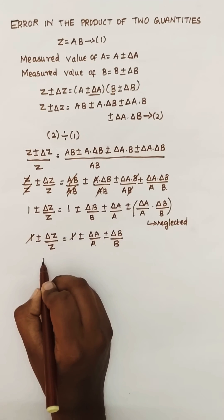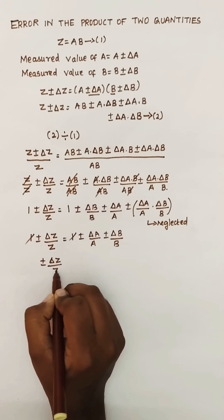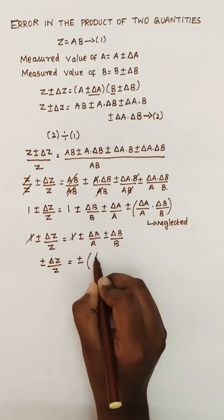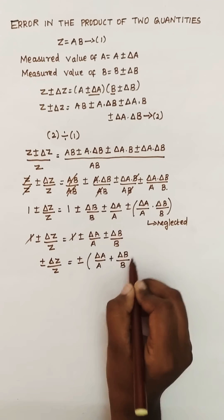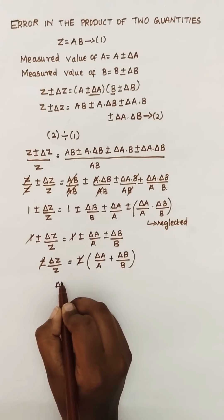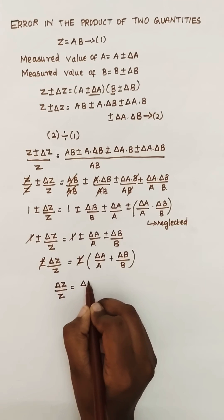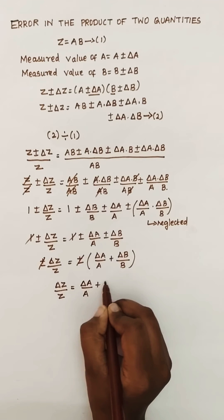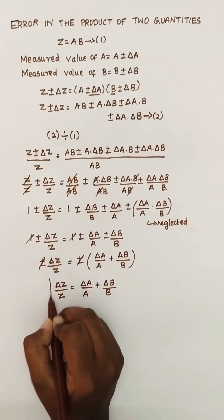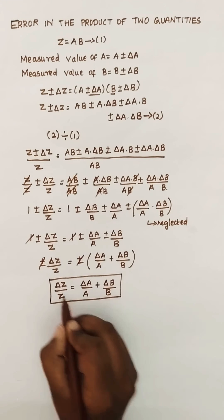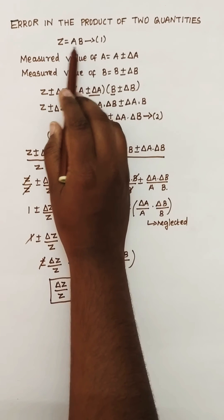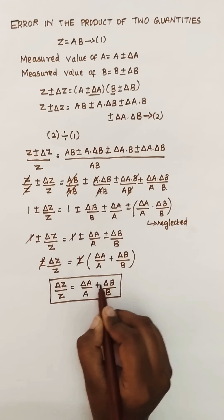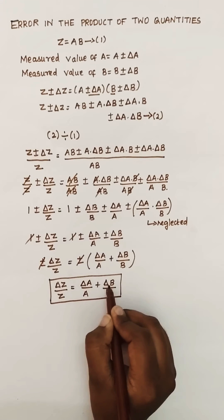The 1 and 1 get cancelled, so the remaining terms give: plus or minus delta z/z equals plus or minus (delta a/a plus delta b/b). The plus or minus on both sides cancel, giving the final equation: delta z/z equals delta a/a plus delta b/b. So delta z/z is the fractional error, and the maximum fractional error in the product of two quantities equals the sum of individual fractional errors.